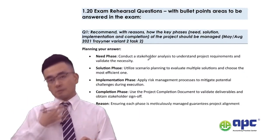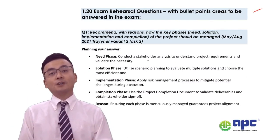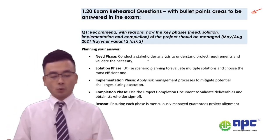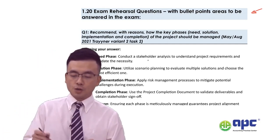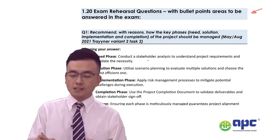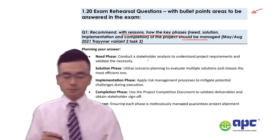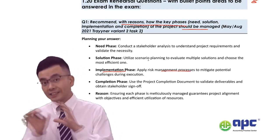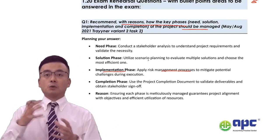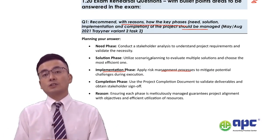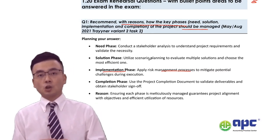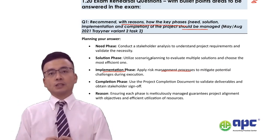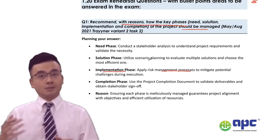The most important thing is to review past exams to see how project management has been tested. For example, in 2021 the examining team asked about recommended reasons for how key phases of a project should be managed — such as the implementation phase and risk management processes: how to reduce risk, how to transfer risk to third parties by buying insurance, and how to ensure costs are not overrun. Position yourself as a consultant dealing with that challenge.